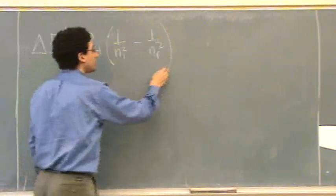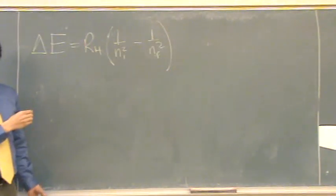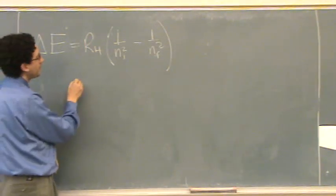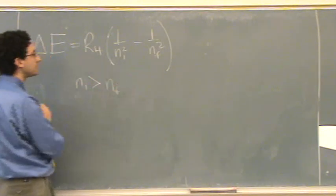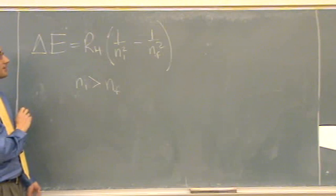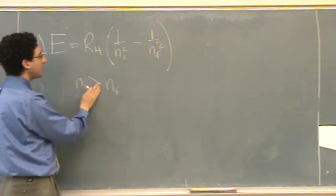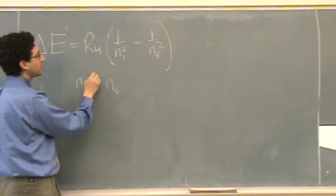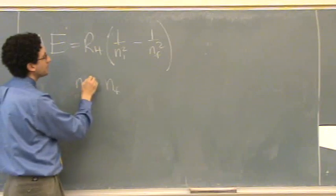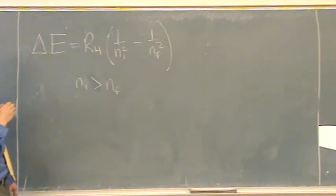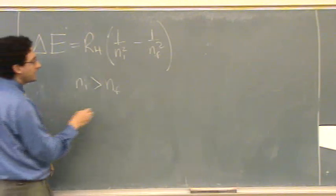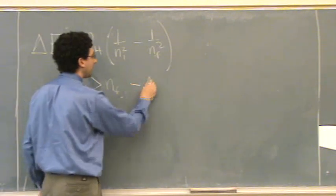Okay, you could get a negative energy if n initial is greater than n final. Right, if our n initial is greater than n final, then you'll get a negative energy.